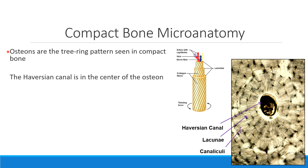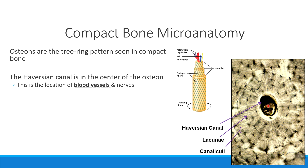At the center of these osteons — these tree ring patterns — we see something called the Haversian canal, or sometimes the central canal; it's the exact same thing. The Haversian canal is the part of compact bone tissue where blood vessels and nerves get into the tissue. Notice that the entire field of view is filled with tissue, so the only place I have space for blood vessels and nerves are in these empty spaces called the Haversian canals.